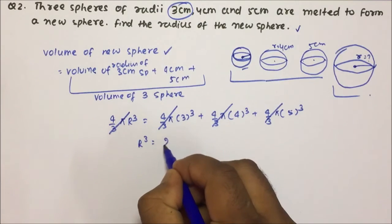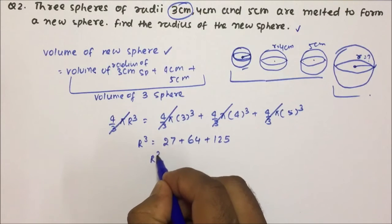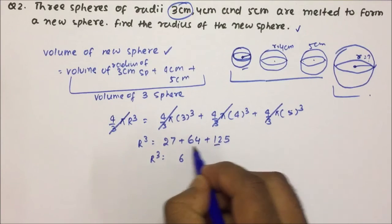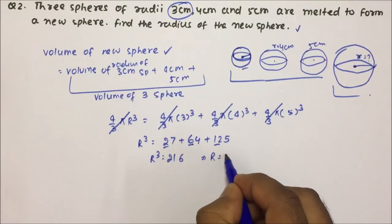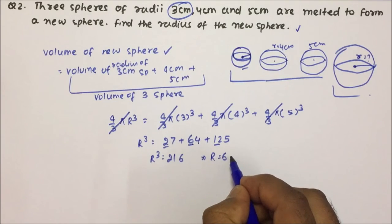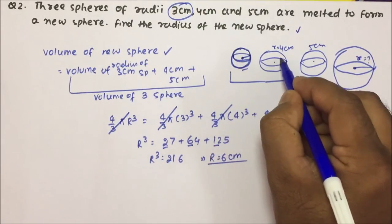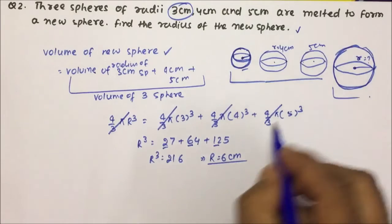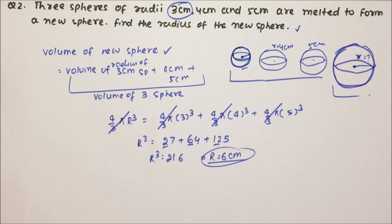So r cube will be equal to 3 cube which is 27, plus 4 cube which is 64, plus 5 cube which is 125. r cube will be equal to 5 plus 4 is 9, 9 plus 7 is 16, then 16 plus 16 and 13 plus 6 is 19 and 19 plus 2 is 21 — so r will be cube root of 216, which gives r equal to 6 centimeter. So friends, when you melt three spheres of radius 3 centimeter, 4 centimeter and 5 centimeter and form a new sphere, the new sphere's radius will be 6 centimeter. Both questions were very important in today's class. Thanks a lot friends for watching the video.